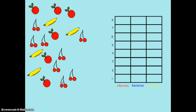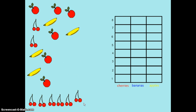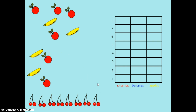I'll start with the cherries. I have one, two, three, four, five, six, seven, eight cherries. Eight students voted that cherries were their favorite.